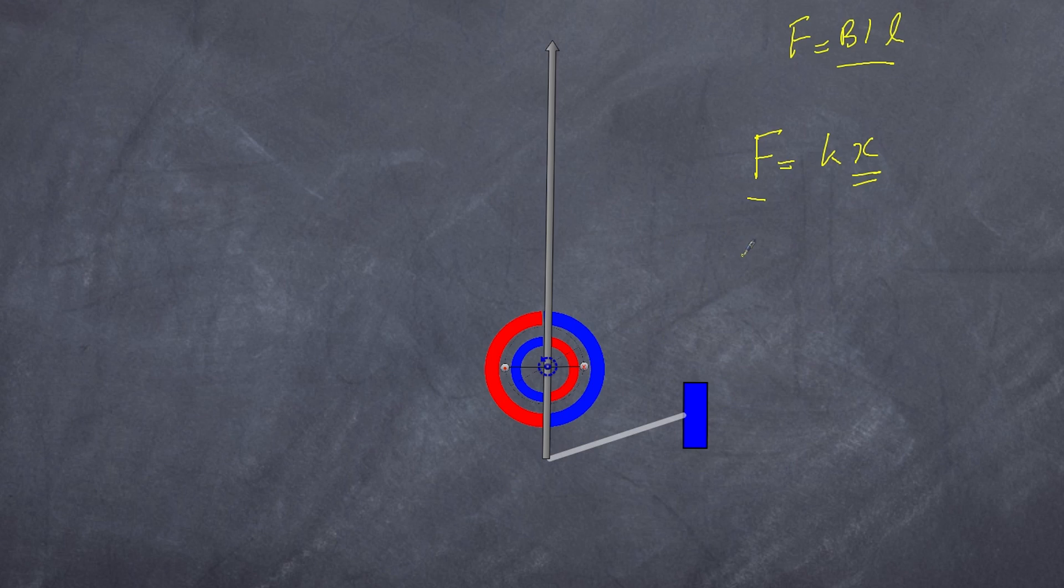So the spring is the second component to understanding why galvanometers work. Without it, this would continue to turn, but the spring causes it to stop at various positions. As a result, you get a needle that will only move a set amount dependent on the current alone.